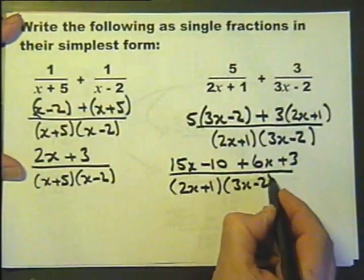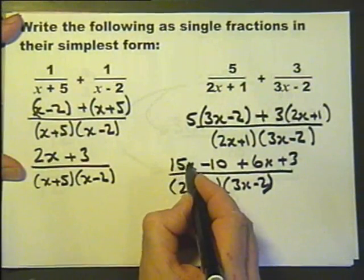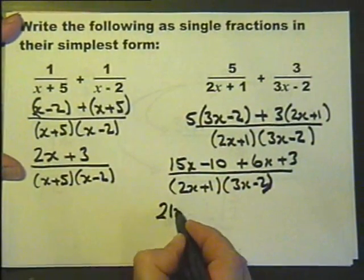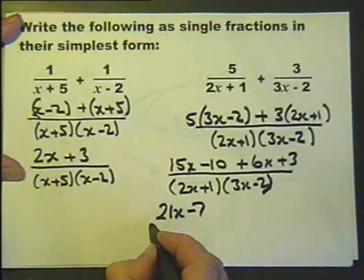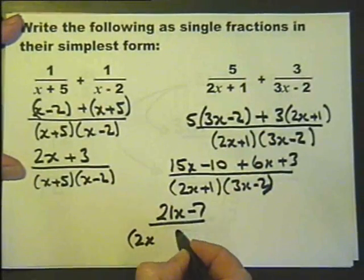Simplifying the top, you've got 15x and 6x, which is 21x, minus 10 and plus 3 is minus 7.